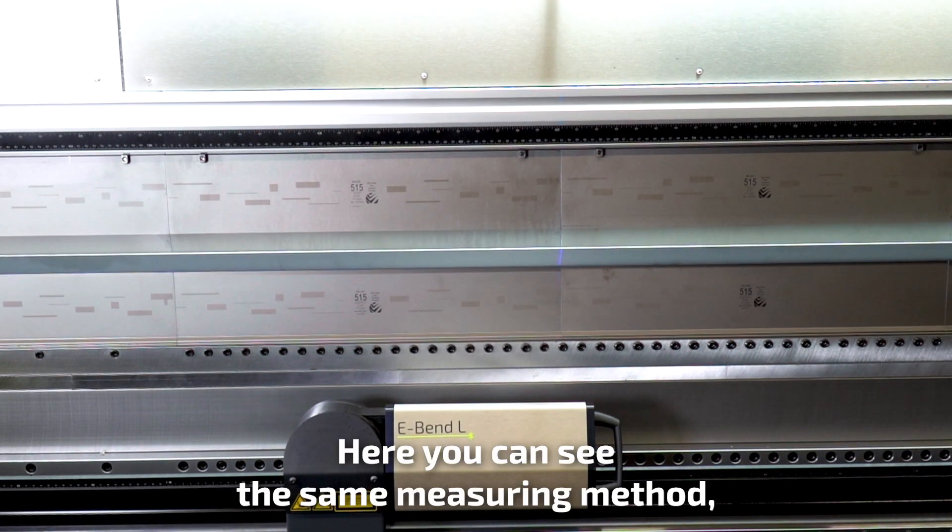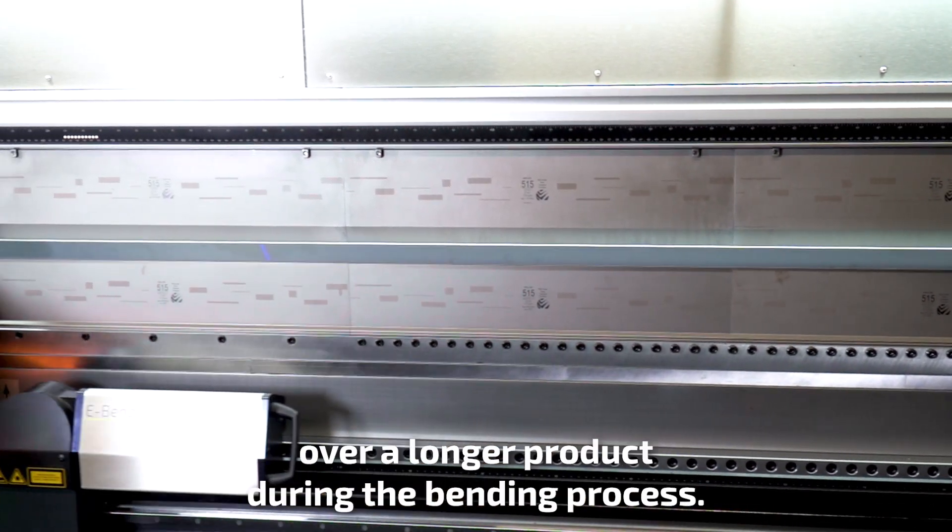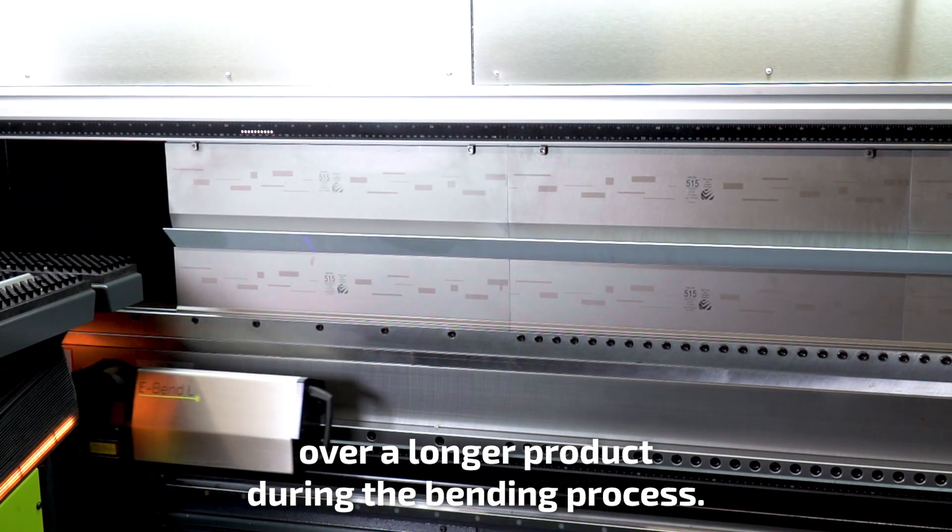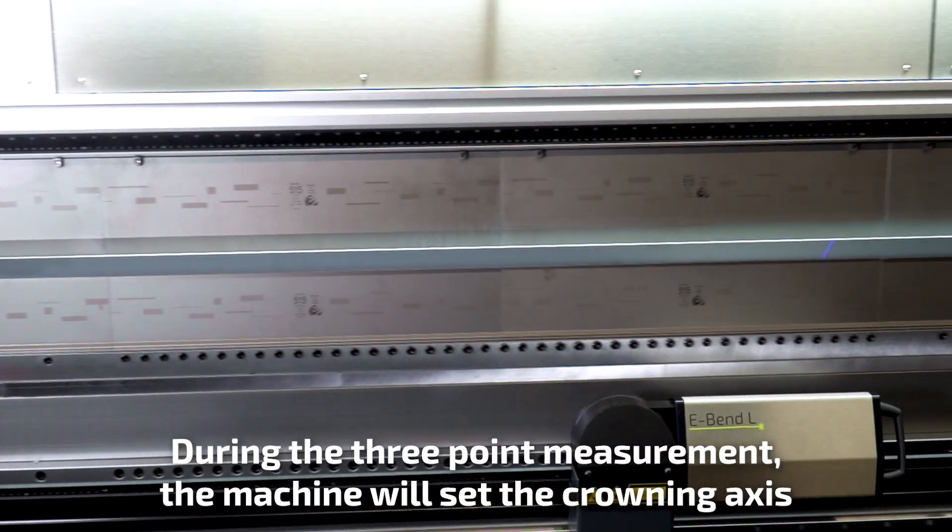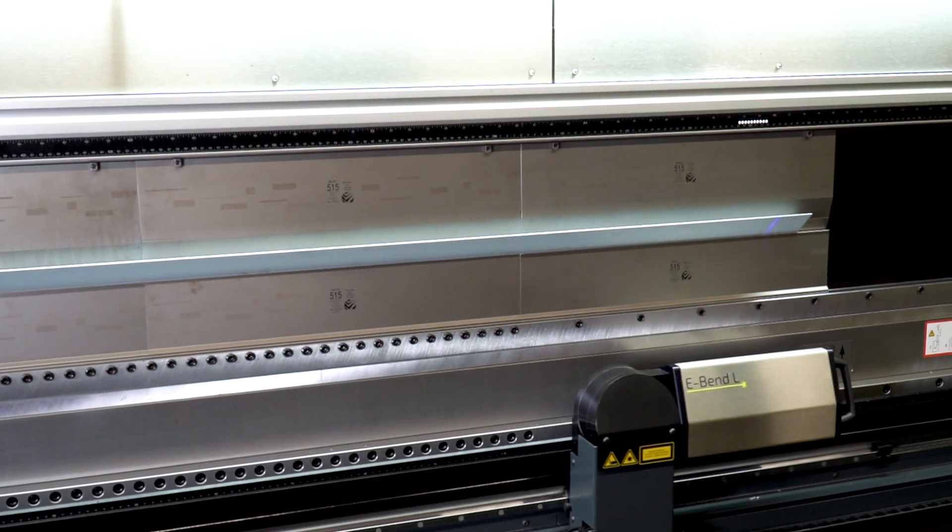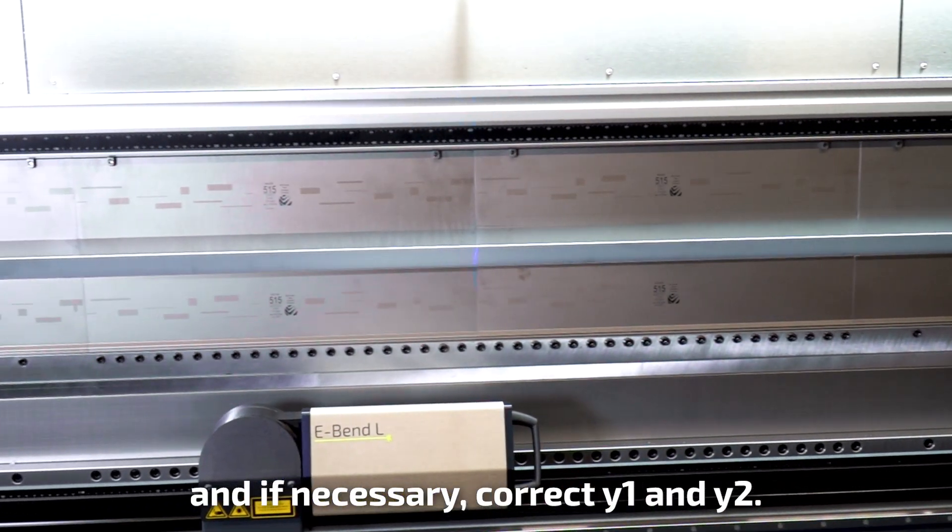Here you can see the same measuring method, but measuring at three different positions over a longer product during the bending process. During the three-point measurement, the machine will set the crowning axis and, if necessary, correct Y1 and Y2.